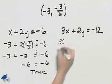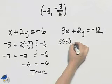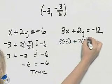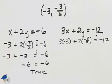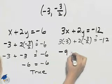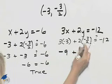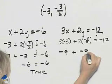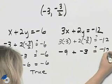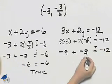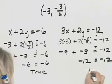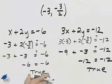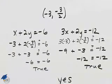Substituting into the second equation, we have three times negative three plus two times negative three halves. We want to see if that equals negative twelve. Three times negative three is negative nine, and the twos cancel giving plus negative three. Negative nine plus negative three is negative twelve, which does equal negative twelve — true. Because we obtained two true statements, this point does satisfy the system.